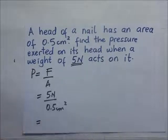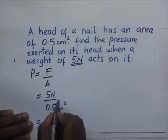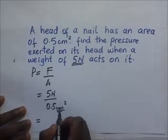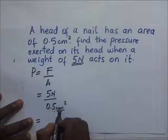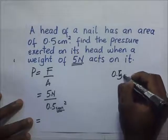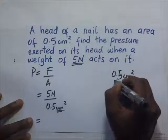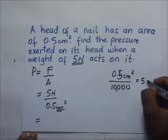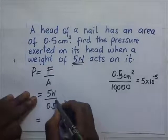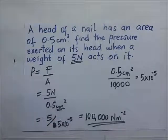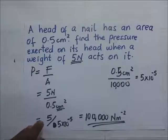We have to first convert this area into meters squared so that we have the correct SI units. To convert 0.5 cm squared to meters squared, we divide 0.5 by 10,000 and we get 5 times 10 to the power negative 5. So the pressure is going to be 5 divided by 5 times 10 to the negative 5, which gives us 100,000 newtons per meter squared.